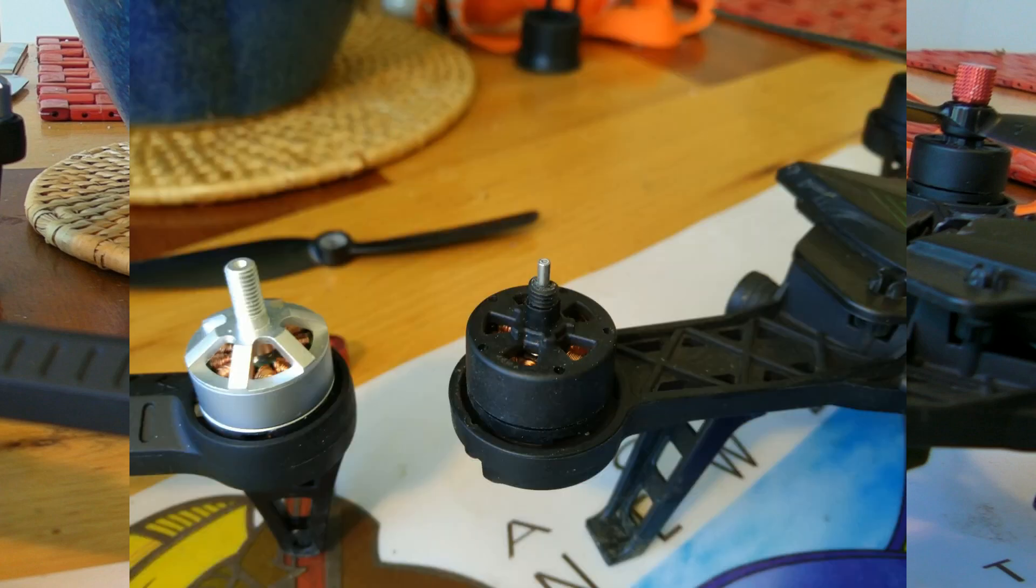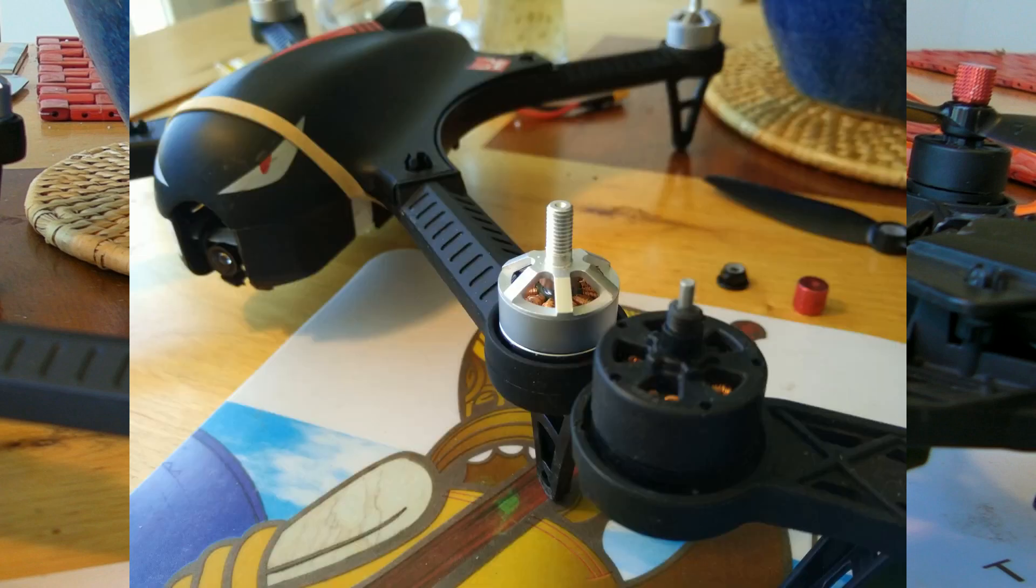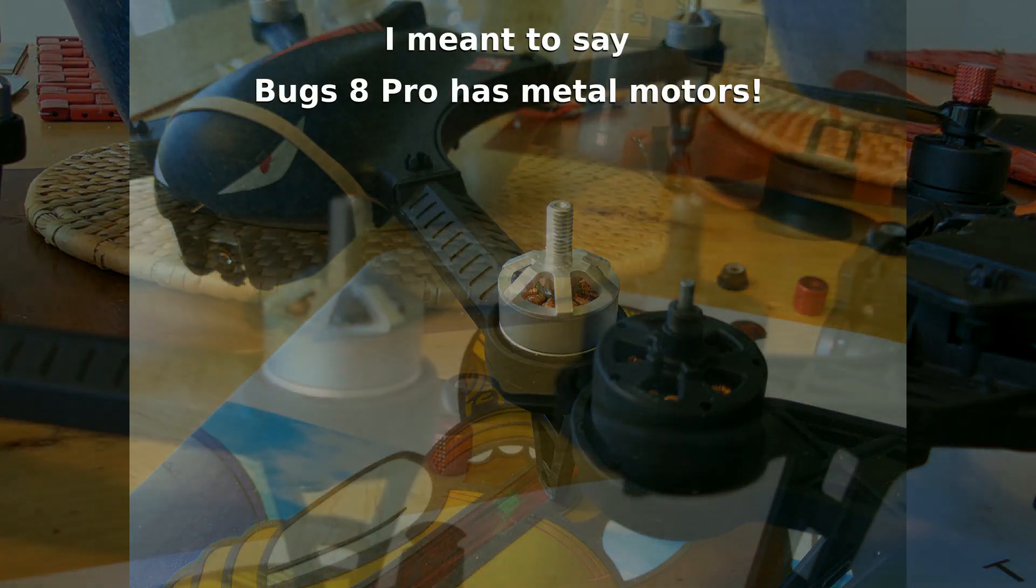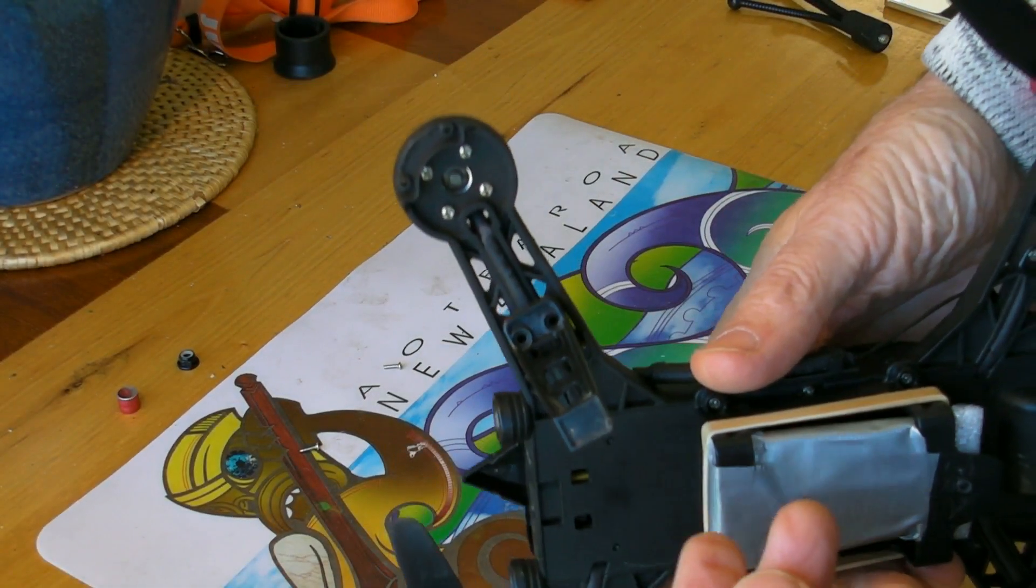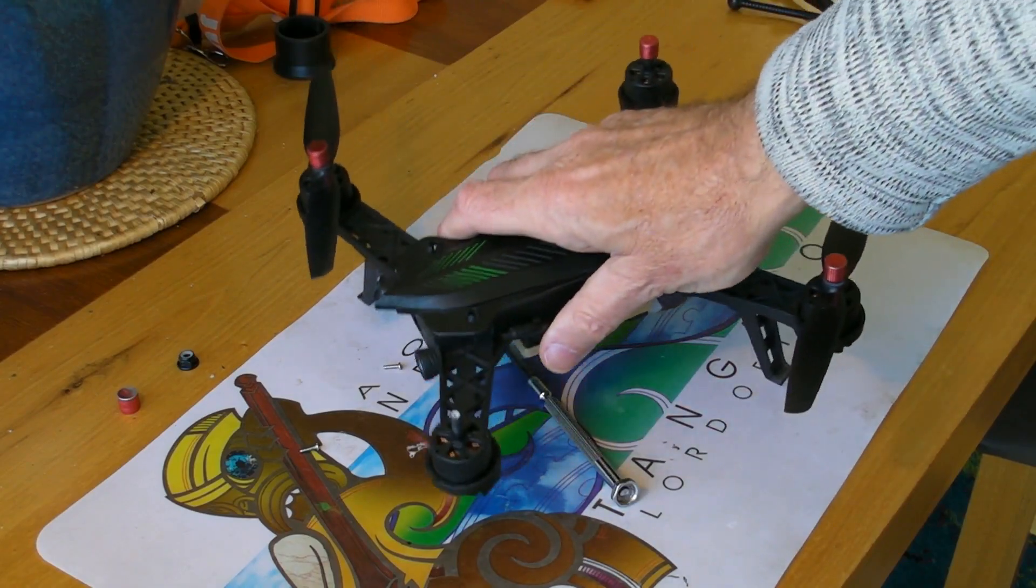Very disappointing to see this, particularly in light of the Bugs 3 Pro where MJX have gone back to metal motors. So step one was to take the leg off to expose the wire running to the motor.